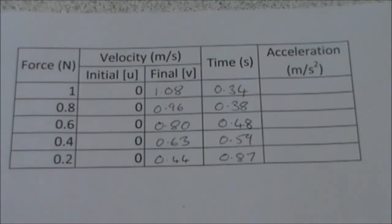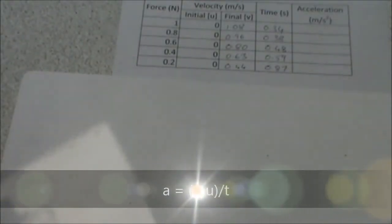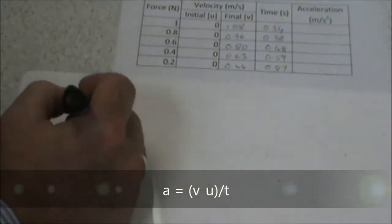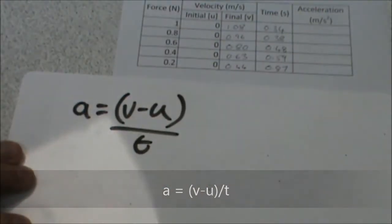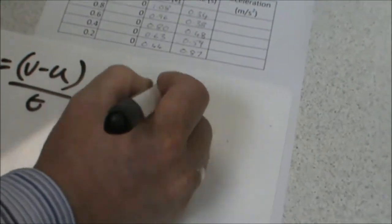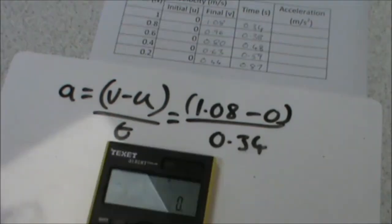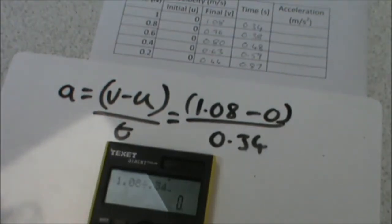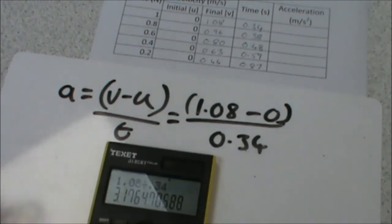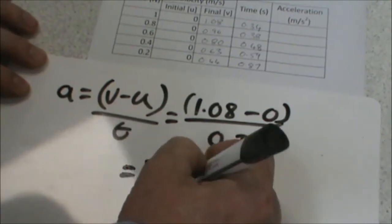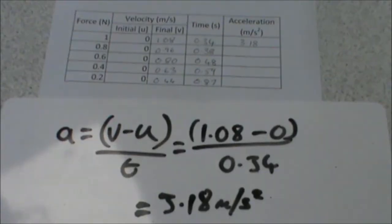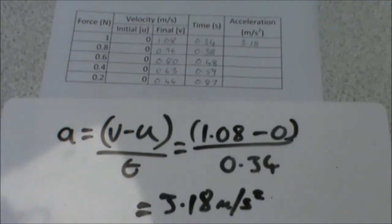So there we have a completed results table. Now we can calculate the acceleration. Remember the formula for acceleration is v minus u divided by t. So we can substitute in our numbers. Using our calculator we get an acceleration of 3.18 metres per second squared. Now following that process you can work out the rest of the accelerations.